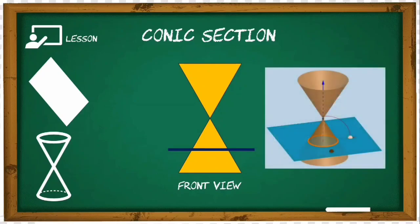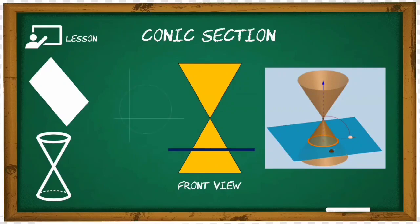In our 3D perspective, you can see the plane intersecting the double cone horizontally, and the image formed is a circle. In relation to our Cartesian coordinate system, on the x and y plane, the resulting graph is, again, a circle.